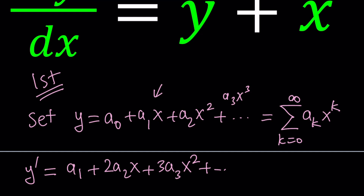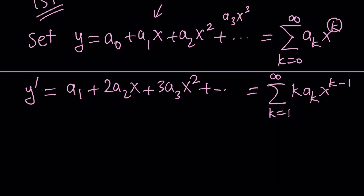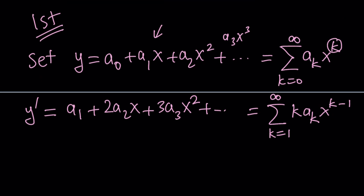Or, if you wanted to differentiate in sigma form, you move the k to the front to get k times a sub k times x to the k minus 1, but then the minimum k has to be 1, because for k equals 0 you'd get x to the power of negative 1, which doesn't make sense. I'm going to use the polynomial form because with the sigma form you need to play with indices — you have x to the k and x to the k minus 1, so you'd have to set them equal to factor out a common factor.